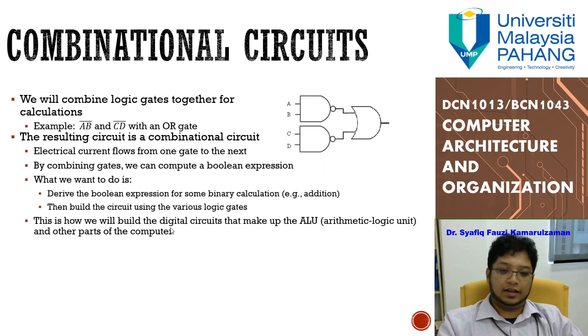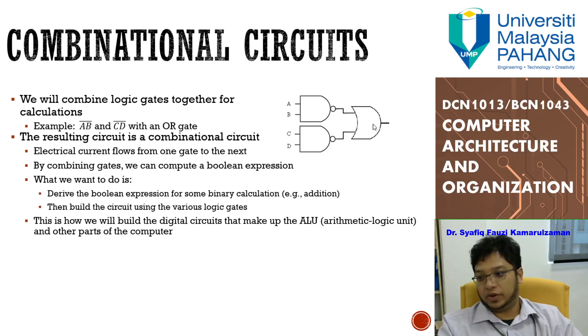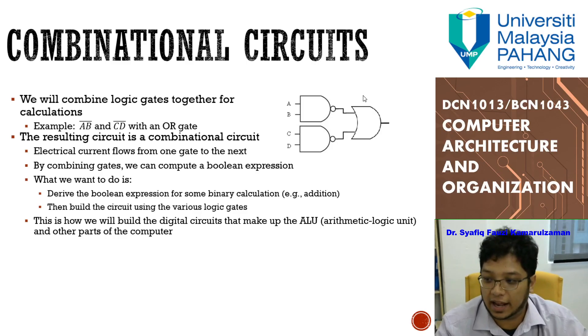Combinational circuit is basically circuits that create a certain function by combining logic gates. For example, here we have ABCD with an OR gate, combine everything and you got this one, we count it as one combinational circuit. They come in from one gate and end with another gate. They have a lot of functions, especially in building circuits that create memory or ALU that help you in calculating addition, subtraction, multiplication, and comparison. All those functions are actually created through combinational circuits.